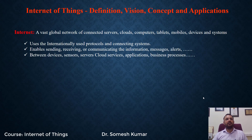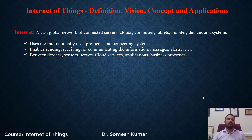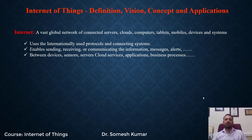The Internet uses internationally adopted protocols, and connected systems are a part of the Internet. The main use of Internet is enabling sending and receiving data, and communicating information between two points. With the help of Internet, we can send information between devices, various sensors, servers, applications or business processes. The Internet is used everywhere.